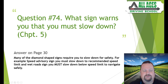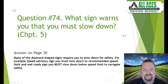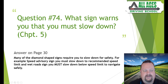Question number seventy-four: what sign warns you that you must slow down? Chapter five, page 30. Many diamond-shaped signs require you to slow down for safety. For example, a speed advisory sign means slow down to the recommended speed, and a wet roads sign means slow down below the speed limit to navigate safely. Other slow-down situations include bumps, dips, railroad crossings, and especially advisory speed signs on curves.